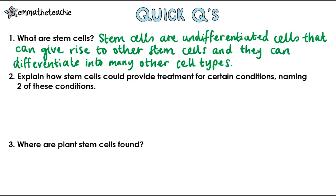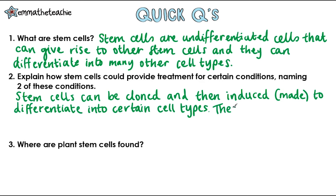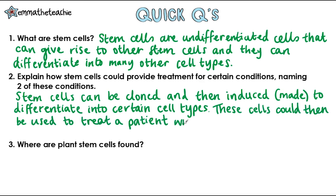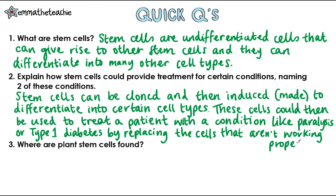Question two: explain how stem cells could provide treatment for certain conditions, naming two of these conditions. Stem cells can be cloned and then induced to differentiate into certain other cell types. These cells could then be used to treat a patient with a condition such as paralysis or type 1 diabetes, by replacing the cells in their body that aren't working properly.